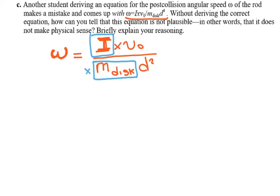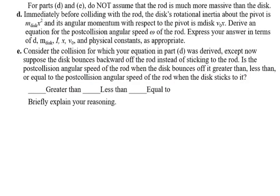That's not true — there are two red flags. The more mass the disk has, the more kinetic energy and momentum it carries, so more energy transferred to the rod should cause more angular velocity. But in this formula, mass of the disk is in the denominator, which is wrong. Also, more inertia in the rod makes it harder to change its angular velocity. Those are the two red flags in this equation.